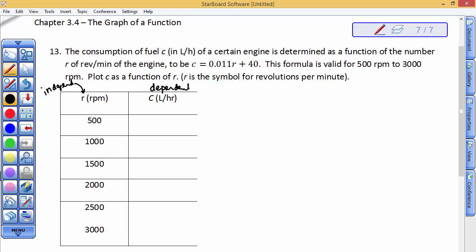This is a problem that involves the consumption of fuel in liters per hour of a certain engine, determined as a function of the RPMs of the engine. The formula is C equals 0.011R plus 40, and we want to evaluate it between 500 and 3000 RPMs with an increment of 500 going up.